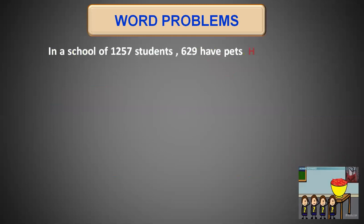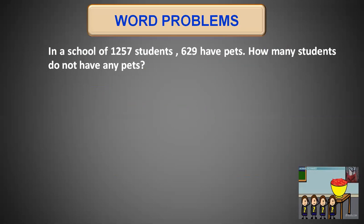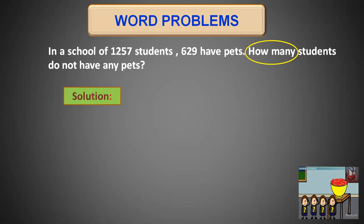Let's have another problem. In a school of 1257 students, 629 have pets. How many students do not have any pet? When dividing it into parts, we see that the total number of students in the school are 1257, and out of them 629 students do have pets. We have to find the number of students who do not have pets. After analyzing the word problem, we subtract the number of students who have pets from the total, and we will get the number of students who do not have pets. The phrase 'how many do not have pets' tells us we have to do subtraction.